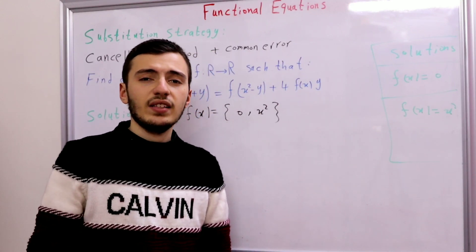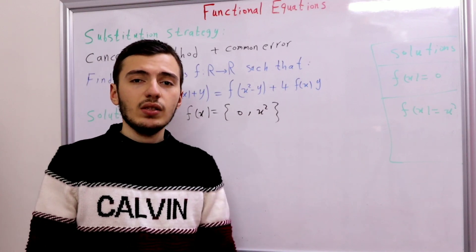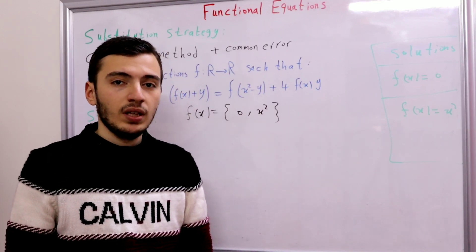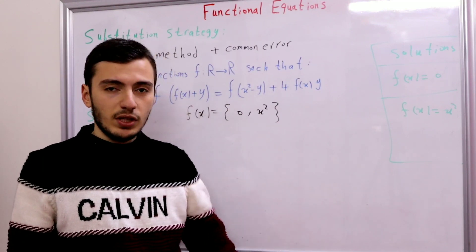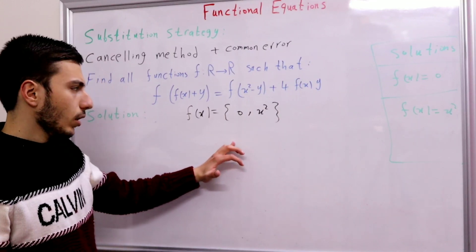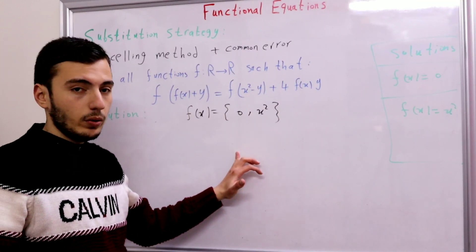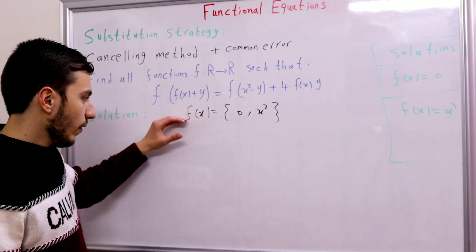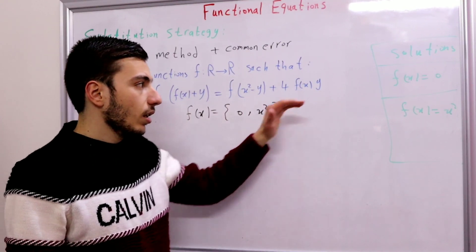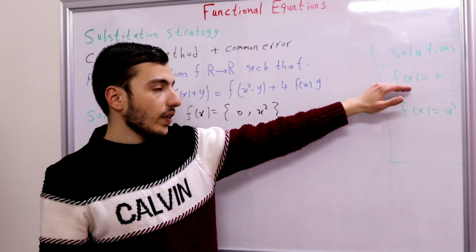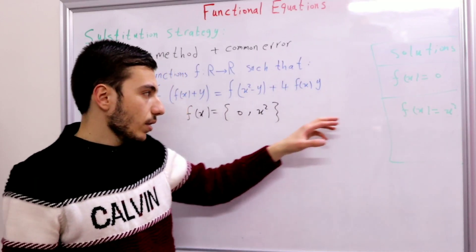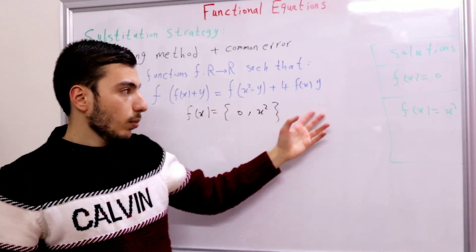But wait — we're not done yet. If you think we're done, you've made the same mistake that lots of Olympiad participants make when solving functional equations. Our work was correct until we said f(x) equals 0 or x². But concluding we have exactly two solutions f(x) = 0 or f(x) = x² doesn't immediately follow from that.